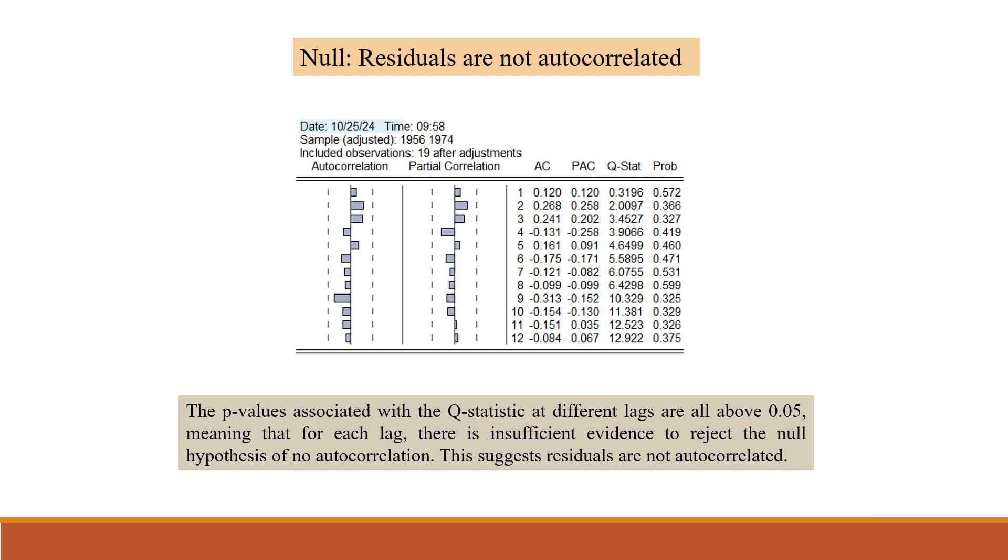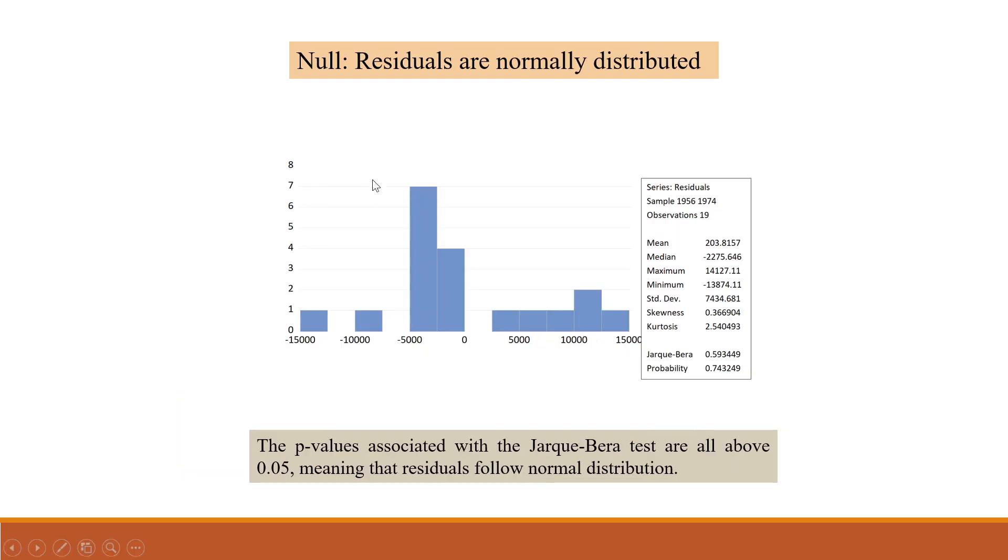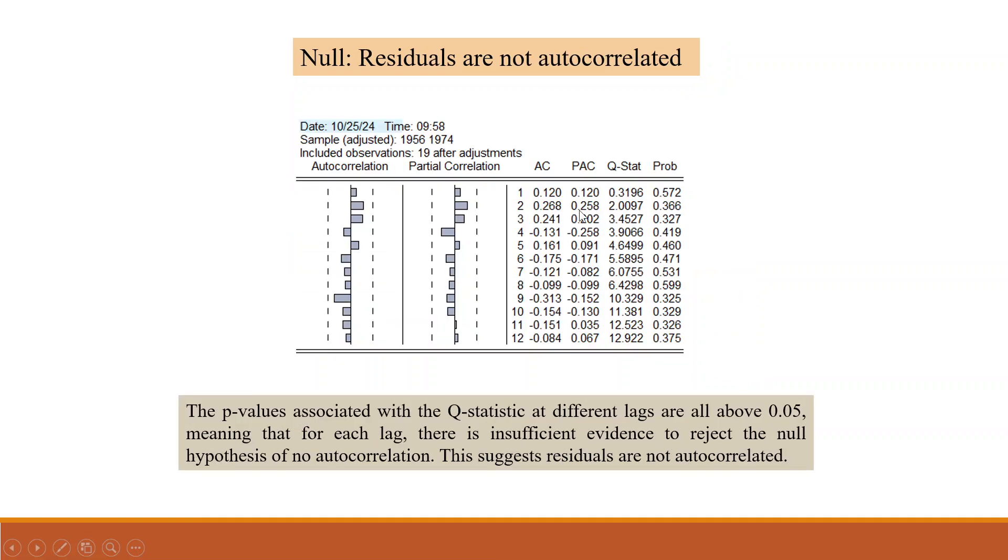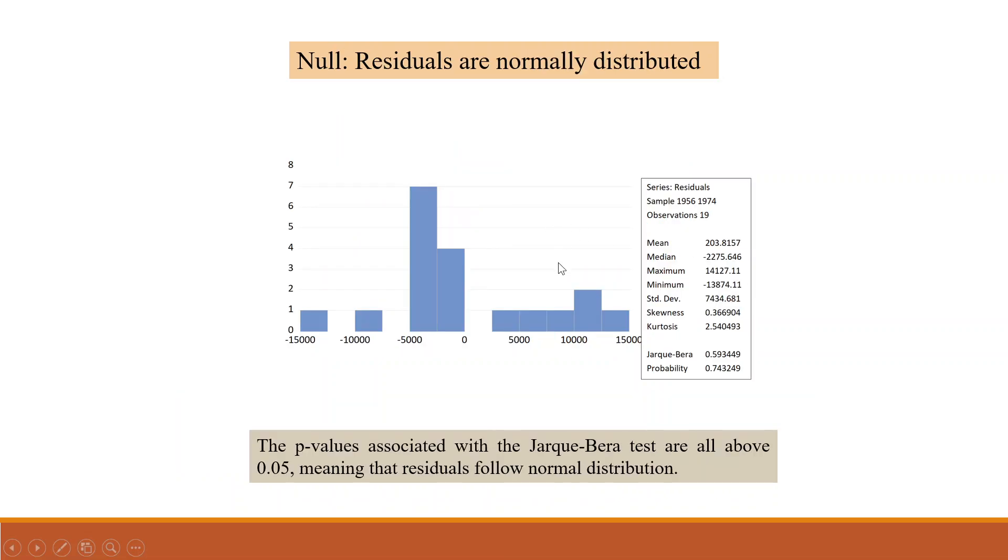Now let's do the interpretation for this also. Null is residuals are normally distributed. See the p-value. The p-value associated with Jarque-Bera test is above 0.05, meaning that residuals follow normal distribution. This is also good. Residuals are not autocorrelated, it is good. Normally distributed, it is also good.